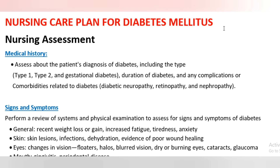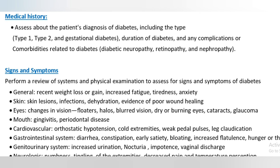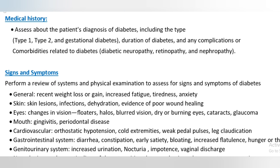Nursing Care Plan for Diabetes Mellitus. Nursing Assessment: Medical History. Assess the patient's diagnosis of diabetes, including the type — type 1, type 2, and gestational diabetes — the duration of diabetes, and any complications or comorbidities related to diabetes, such as diabetic neuropathy, retinopathy, and nephropathy.